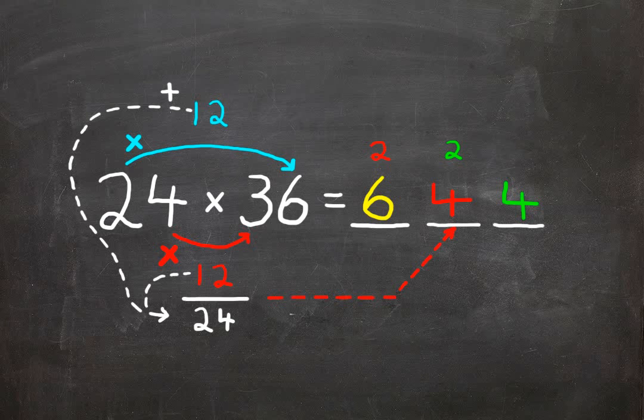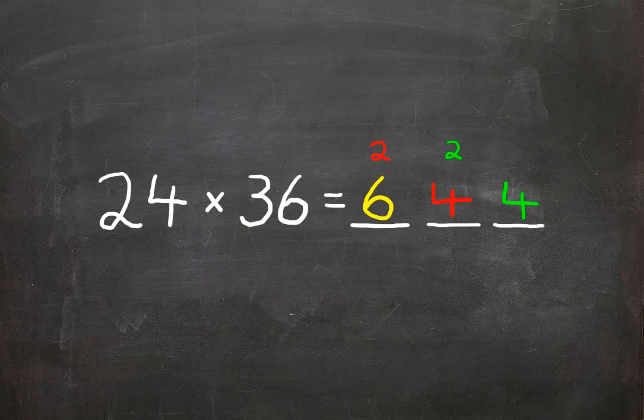So now, we've gone so far in building our answer. Now we just add up the columns. So we have 4 and then 4 plus 2 is 6. 6 plus 2 is 8. And our answer for 24 times 36 is 864.